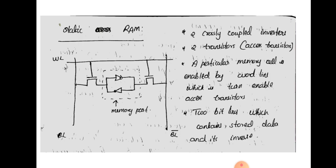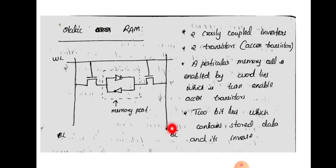In a static RAM cell, the main memory element consists of two inverters connected back to back. There is one word line and two bit lines, represented by BL and BL-bar. There are also two access transistors, which enable the memory cell to access the bit lines. BL and BL-bar act as input or output lines. The access transistors' gates are connected to the word line — whenever a high signal is given to the word line, the access transistors turn on, enabling access to the bit lines.